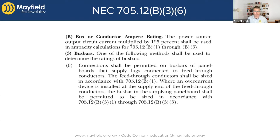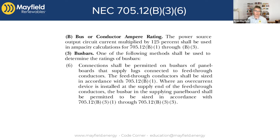In 2020, we have this language — connections on the bus bars that supply lugs connected to feed-through conductors. We'll go through what the scenarios are with a couple of images. The big thing to recognize is that it gets referenced back to 705.12 B1, which talks about connections to feeders. If we put in an overcurrent device to protect at the feed-through lugs, the downstream conductors and panels, we're actually able to utilize the 120% rule in 705.12 B3.2.